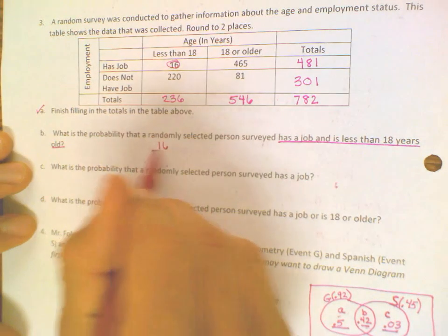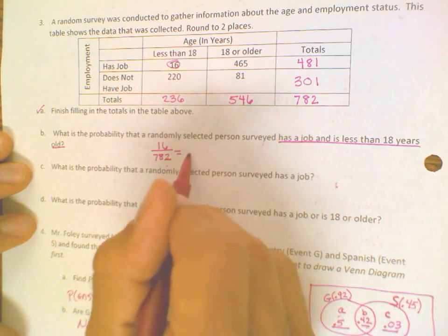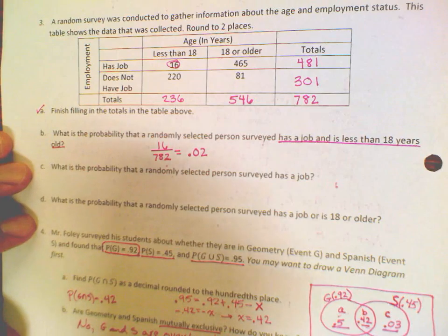So 16 people out of 782 is 0.02, or only 2% of the population.